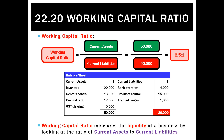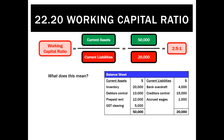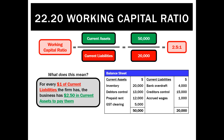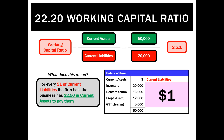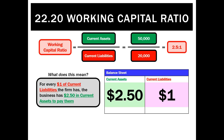The working capital ratio measures liquidity by comparing current assets to current liabilities. What does it actually mean? It means that for every dollar of current liabilities the firm has, it has $2.50 in current assets to pay them. So if there's a dollar of current liabilities on the balance sheet, on the current asset side there would be $2.50 to pay it with — more than enough to cover short-term debts.